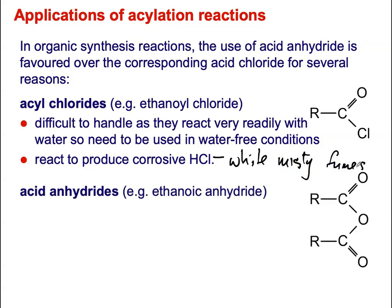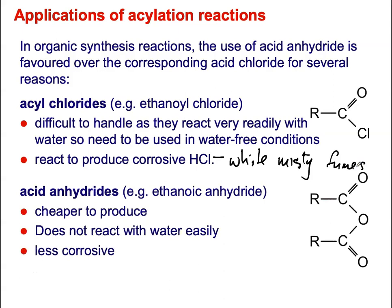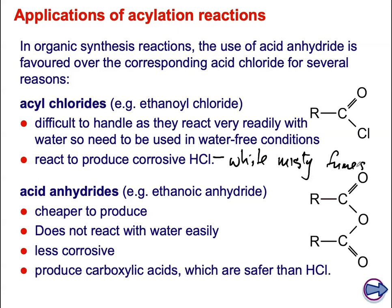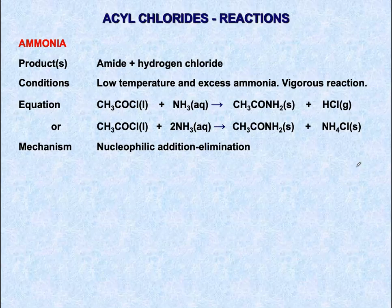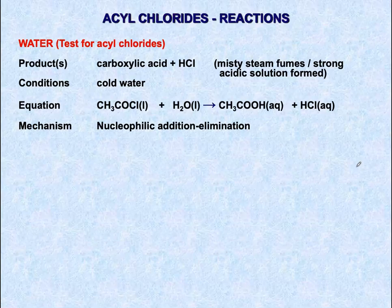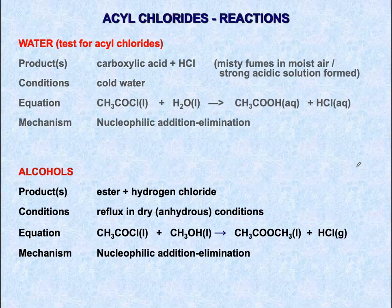We therefore use acid anhydrides instead, which are less corrosive, cheaper to produce, do not react with water as easily, and produce a carboxylic acid as the second product — a weak acid that is much safer than HCl. The mechanism and the summary of reactions of acyl chlorides — including conditions and equations — are essential to know. Thank you for watching.